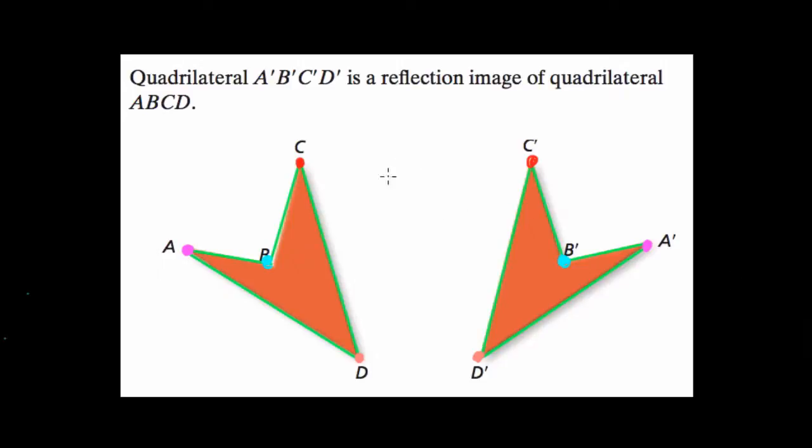First, to find the line of symmetry I would connect the corresponding points. C and C prime are at the same relative location on each shape—on that top vertex. A and A prime are both on the outside of the shapes. B and B prime are sandwiched between A and C, and D and D prime are down here on the bottom.